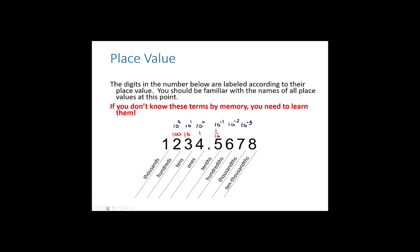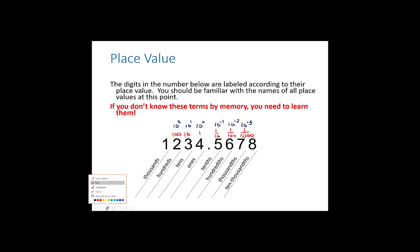One thing you should know: I am colorblind and will sometimes say things like 'look at the orange spot' when there is no orange spot. So just make your best guess as to what color I'm referring to if that happens, and I do apologize. Make sure you know those place values if they're not familiar.